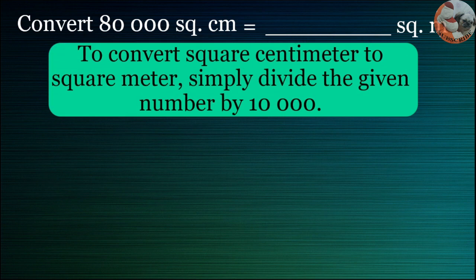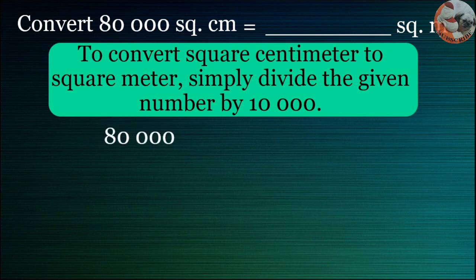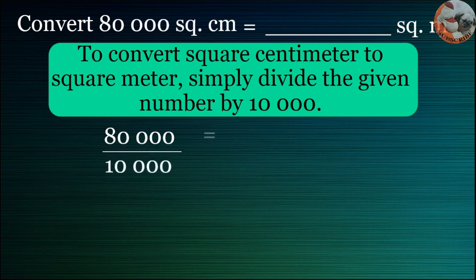To convert square centimeters to square meters, simply divide the given number by 10,000. The given number is 80,000. Divided by 10,000, it is equal to 8,000.